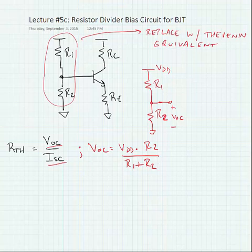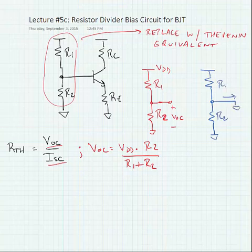For the short circuit current, we're going to take the circuit and we're going to short the output and measure the current flowing. Of course, I short circuit is equal to VDD divided by R1.